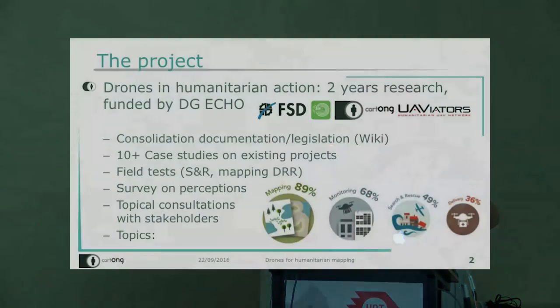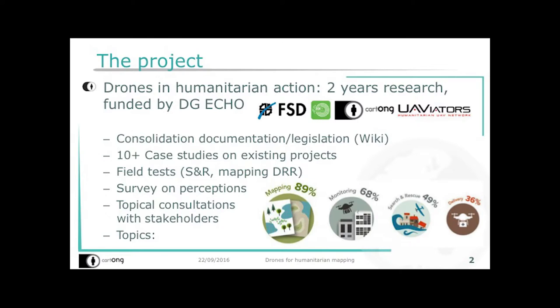We conducted field tests to verify assumptions and ran a large survey on perceptions among humanitarians around the world to understand how they see UAVs and what they think they can be used for. We also ran topical consultations including one on mapping. Overall, the project tackles four aspects of UAVs for humanitarians: mapping, monitoring, search and rescue, and payload delivery.